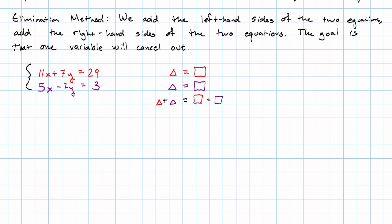If we write this out in detail, we would write the two left-hand sides added together: 11x plus 7y plus 5x minus 7y. That will equal the two right-hand sides added together. Now we need to simplify this by combining like terms.